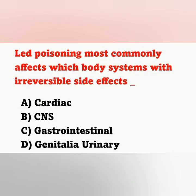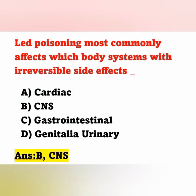Next question: Lead poisoning most commonly affects which body system with irreversible side effects? Option A: Cardiac system, Option B: Central nervous system, Option C: Gastrointestinal system, Option D: Genitalia and urinary system. Lead poisoning most commonly affects the central nervous system — Option B is the correct answer.